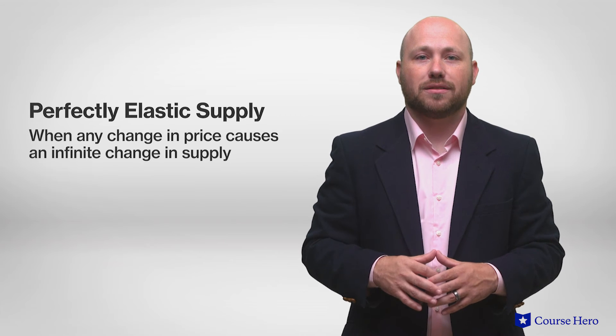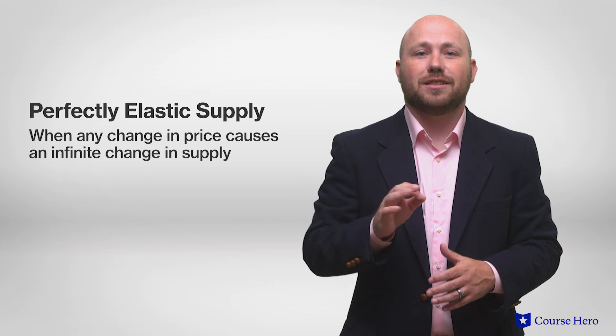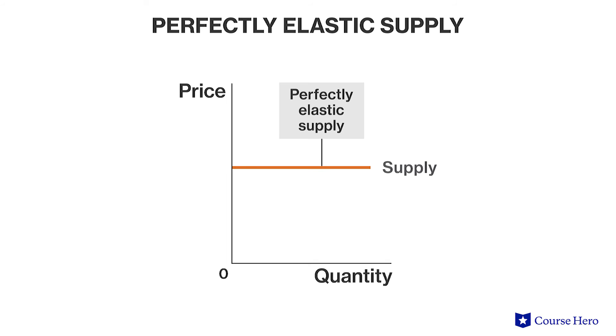When any change in price causes an infinite change in supply, this is a perfectly elastic supply. In this case, sellers are so sensitive to a decrease in the price of their product that they reduce the quantity supplied to zero. The supply curve is a horizontal line. This is a hypothetical example that does not really exist in reality, as it's difficult to make an infinite amount of a product and situations often change.